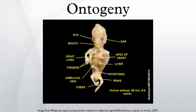Etymology: the word ontogeny comes from the Greek 'on,' meaning 'being' or 'that which is,' the present participle of the verb 'einai,' meaning 'to be' or 'I am,' and from the suffix '-geny,' from the Greek '-genia,' which expresses the concept of mode of production.